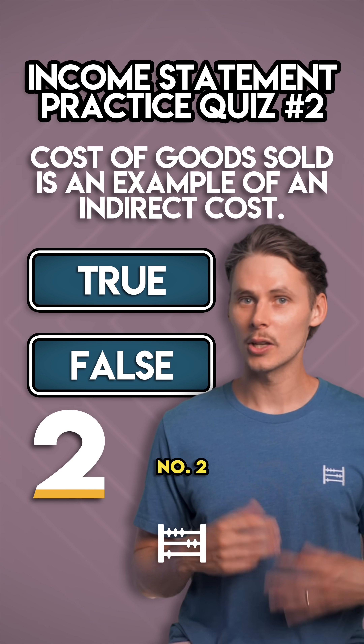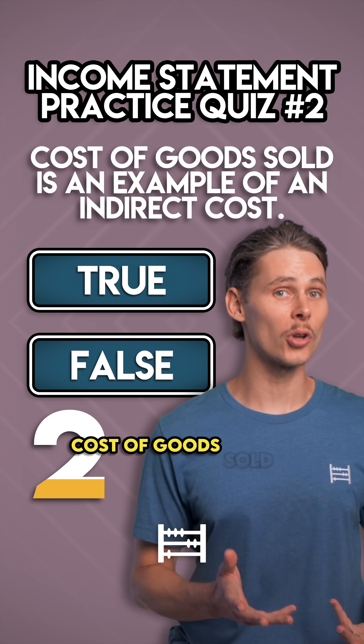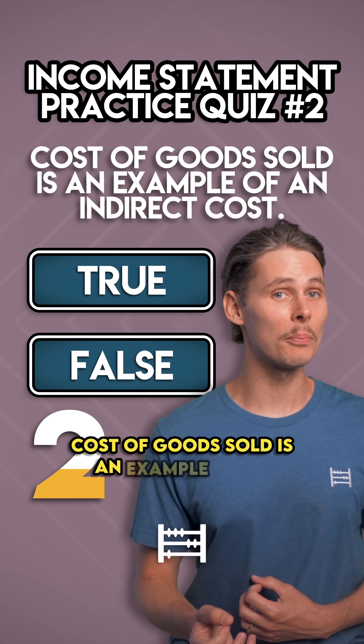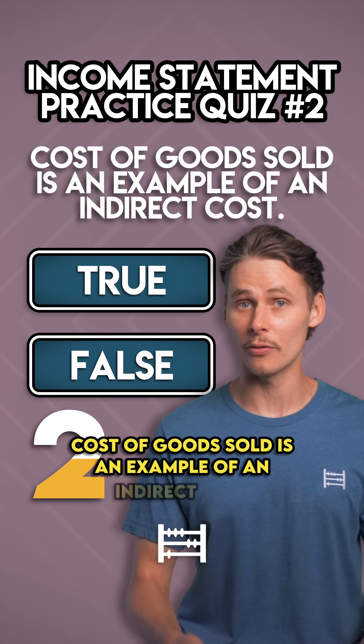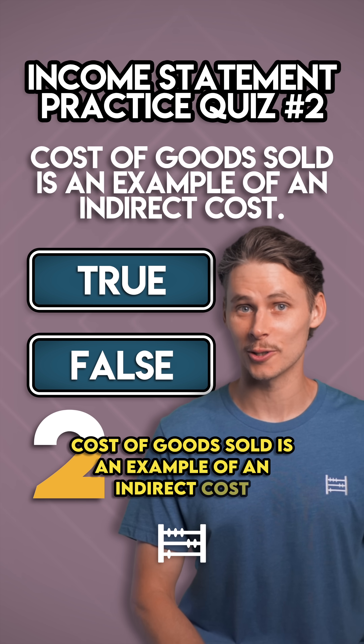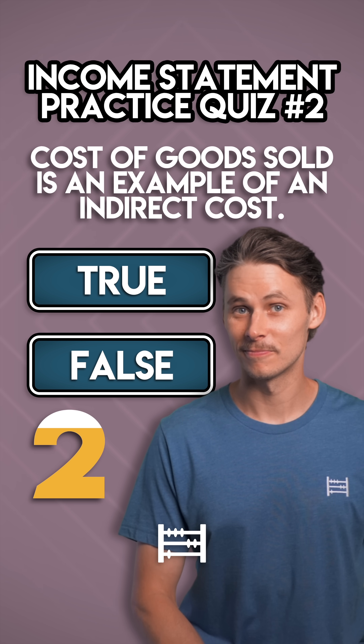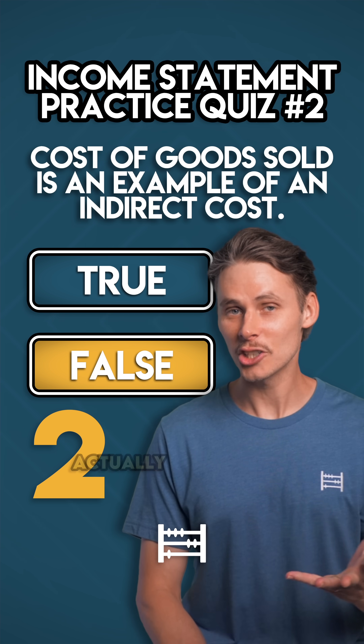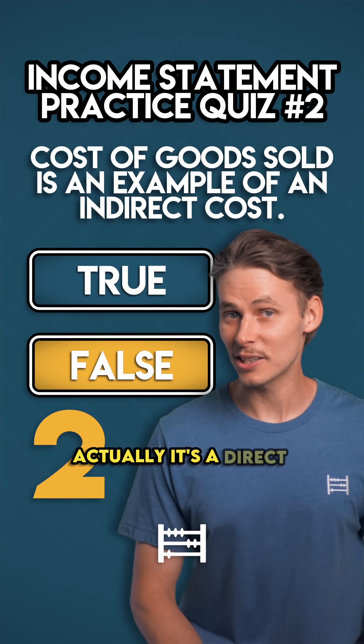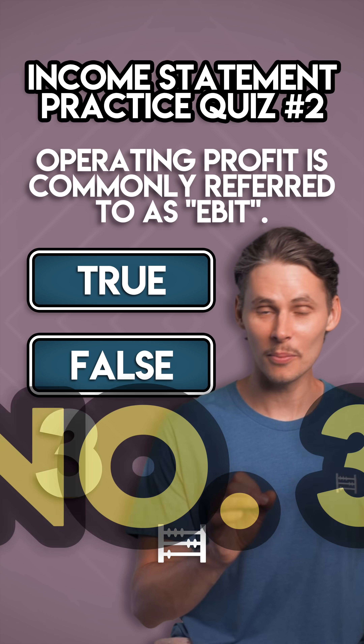Number two: cost of goods sold is an example of an indirect cost. Actually, it's a direct cost.